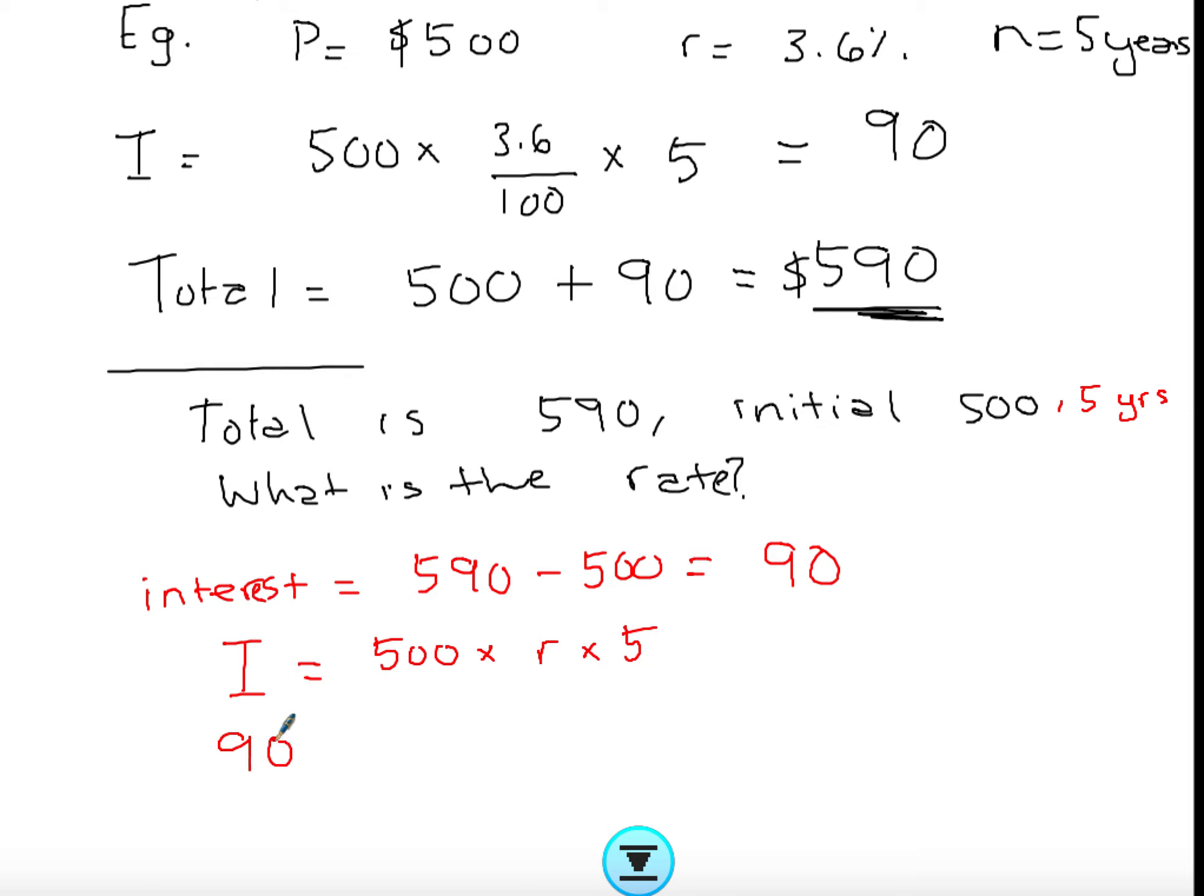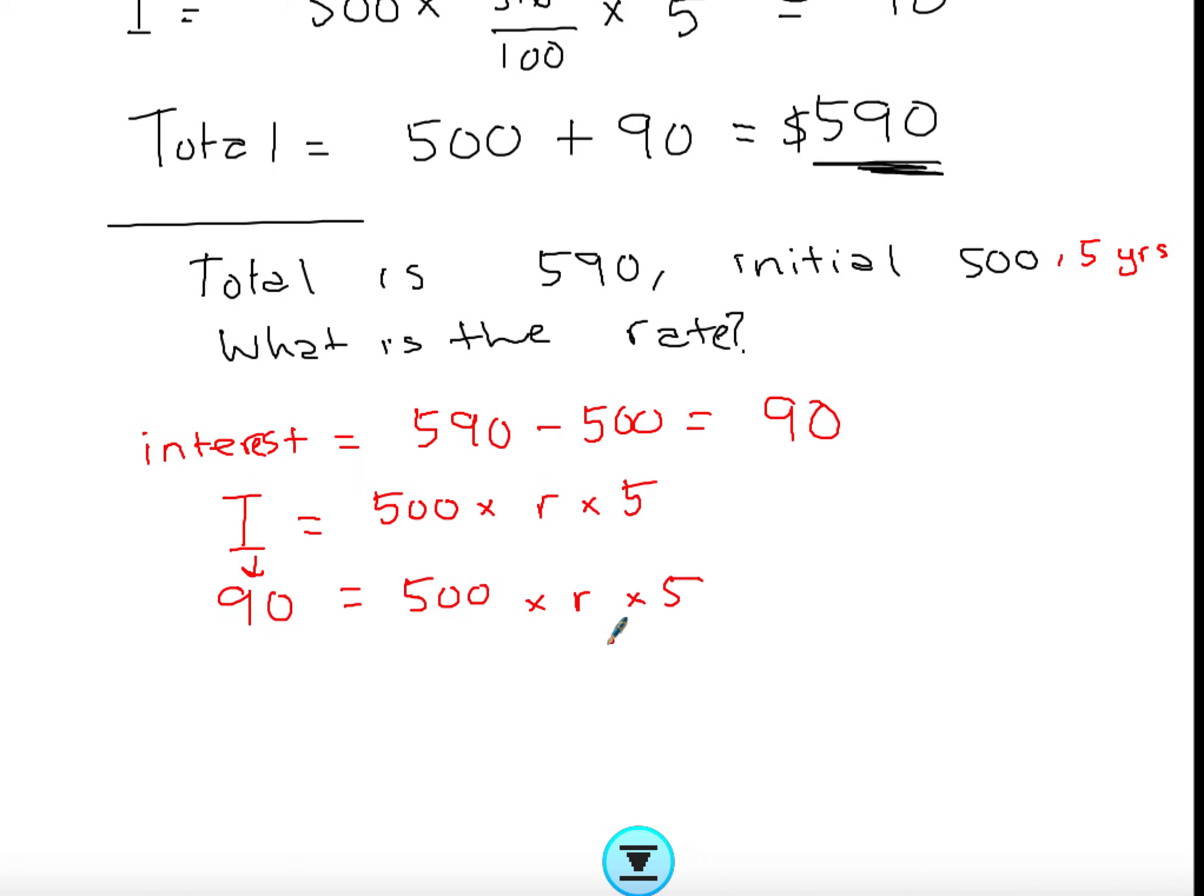Assuming we know it's for five years, you're going to start substituting values. We know the interest is 90, and the rate is out of 100, divided by 100. You start moving things around and you will get 90 divided by 500 and then divided by 5, so we get 0.036 equals r over 100. Cross multiply, you're going to get r equals 3.6, which is what we were supposed to get. Moving things around is important - sometimes they might ask you to find the year, sometimes the rate.